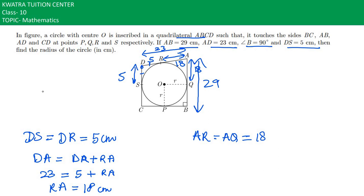Now we will find out QB. Because I know AB is equivalent to AQ plus QB. AB is equal to 29 cm. Substitute AQ is equal to 18 cm.